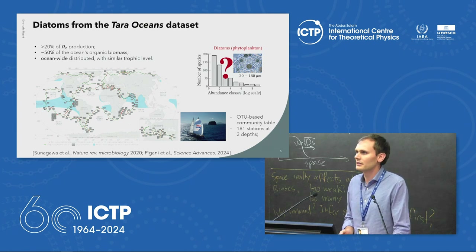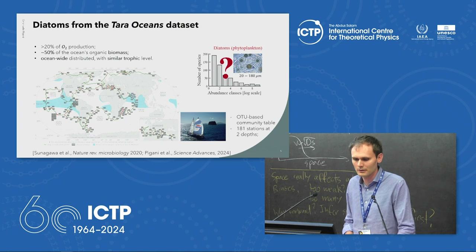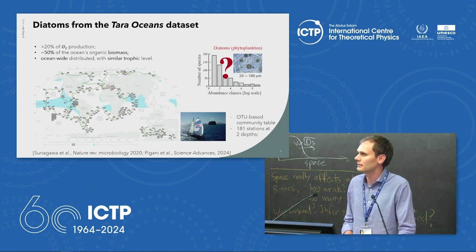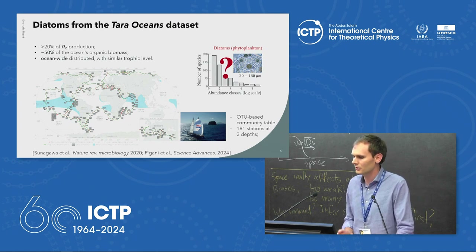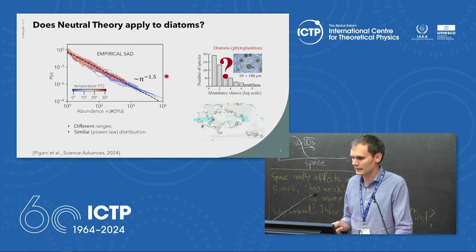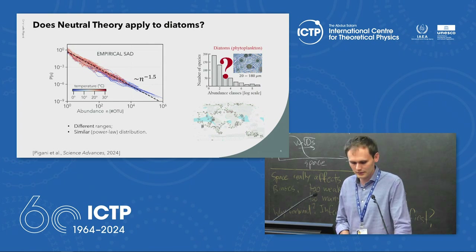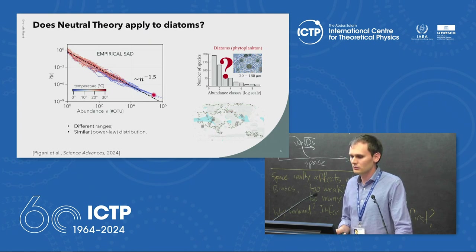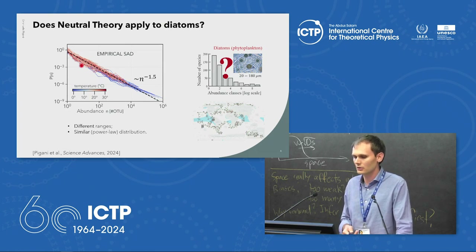The ocean-wide distribution of diatoms allows for fair comparison across different temperatures and latitudes. We leveraged data from the Tara Ocean dataset with almost 200 samples using OTU-based classification. Making histograms for all stations and coloring by temperature, the most abundant communities are the coldest ones — expected from diatom biology — but all stations closely align to a single power law with the same exponent.